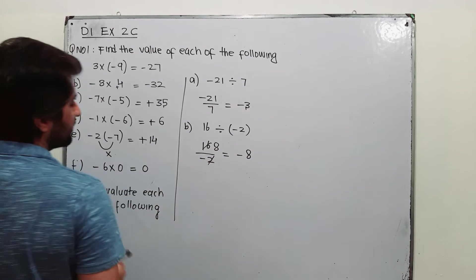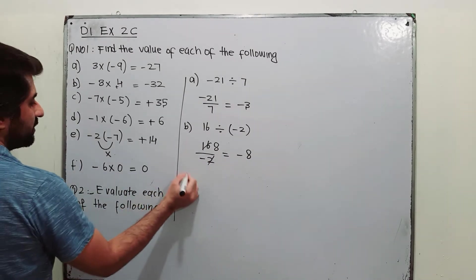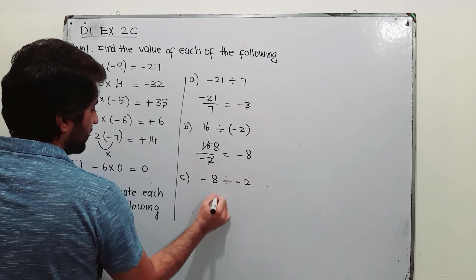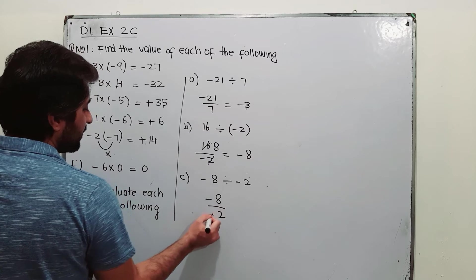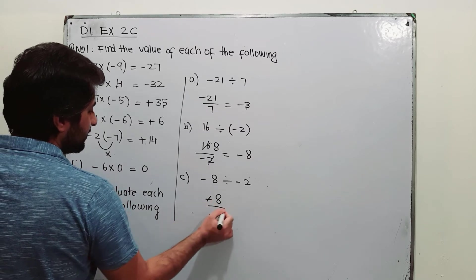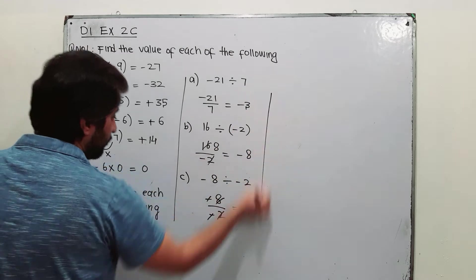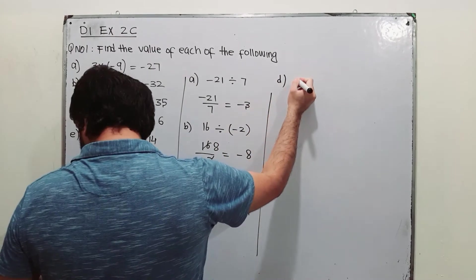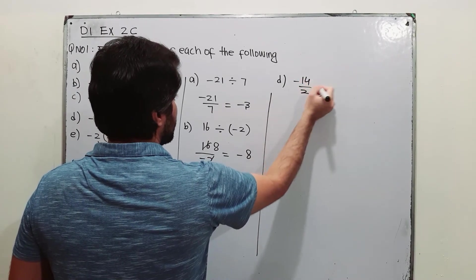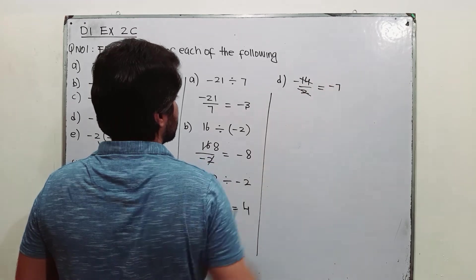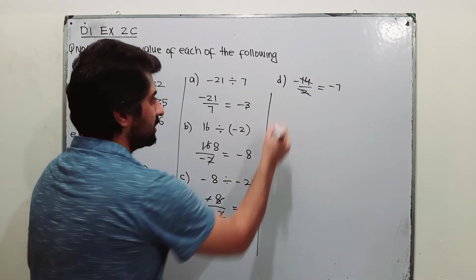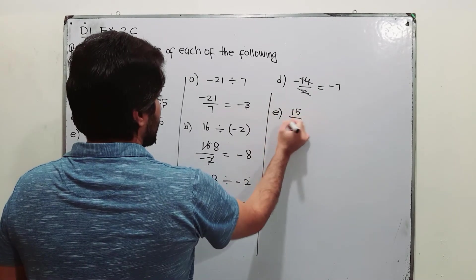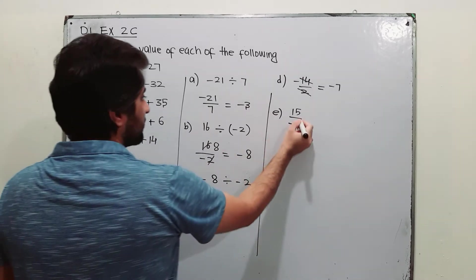For part b, 16 over minus 2: 8 times 2 is 16, so the answer is minus 8. Part c is minus 8 divided by minus 2 — write it as minus 8 over minus 2; the two negatives cancel, and 2 into 8 gives 4. Part d is minus 14 divided by 2; cancel them and the answer is minus 7, since 7 times 2 is 14.